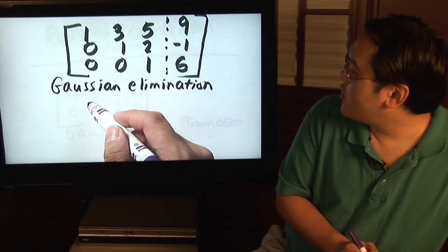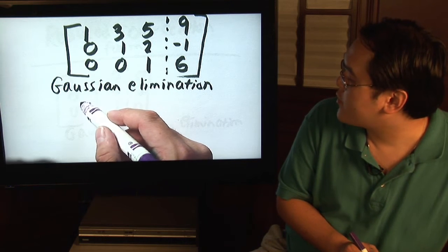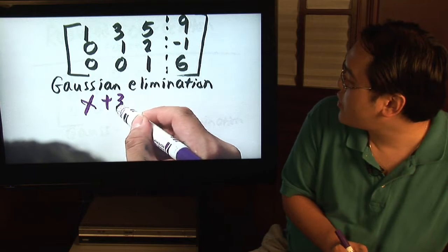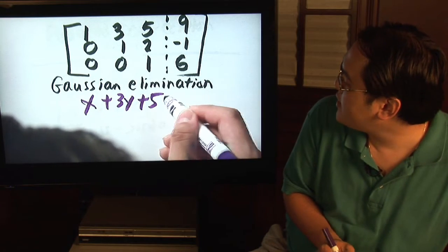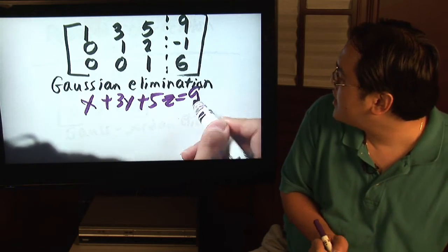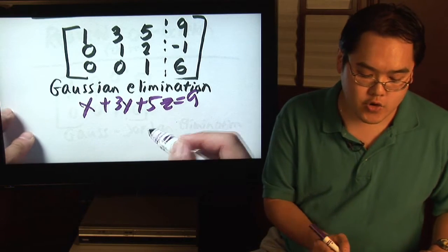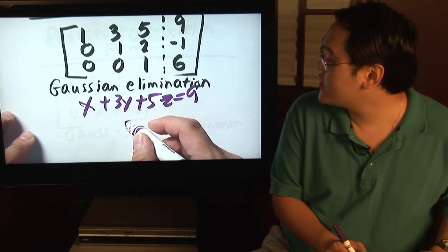Once you have a matrix in row echelon form, you can convert this to x plus 3y plus 5z equals 9. In other words, you'll be able to convert the matrix into various equations.